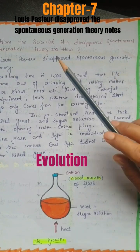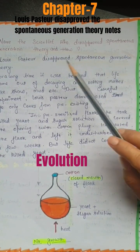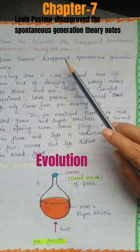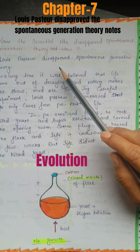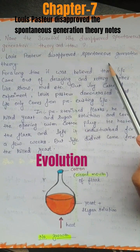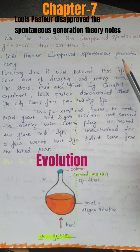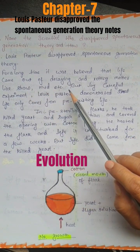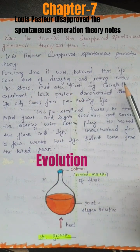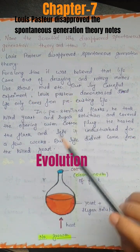Question number 3: Name the scientist who disapproved spontaneous generation theory and how. Louis Pasteur disapproved spontaneous generation theory. Now, what is spontaneous generation theory? In it, life comes out of decaying and rotting matter like straw and mud.